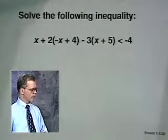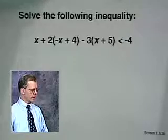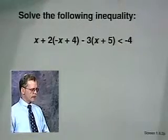Here's our inequality: x plus 2 times the quantity negative x plus 4, minus 3 times the quantity x plus 5, is less than negative 4.